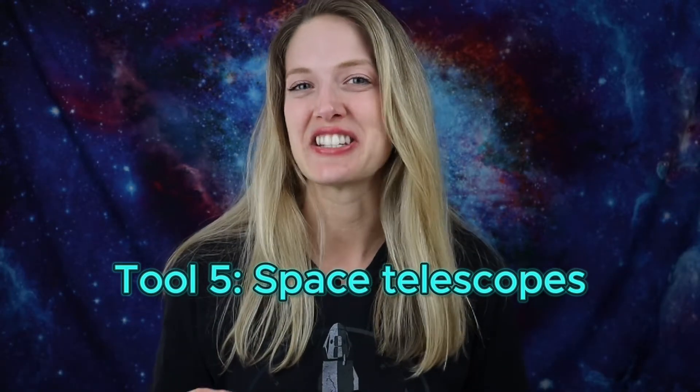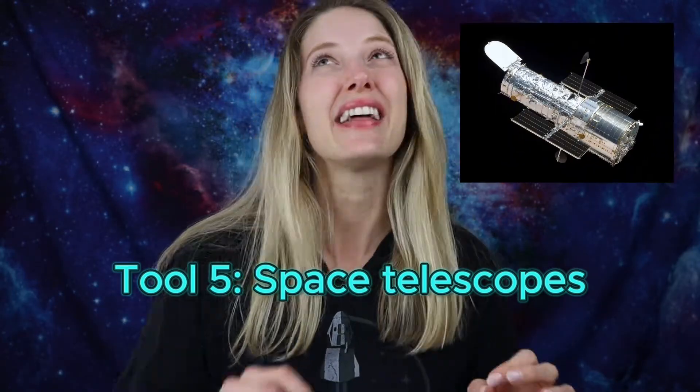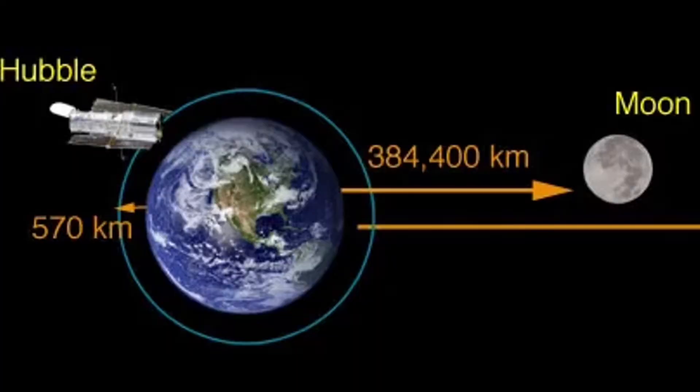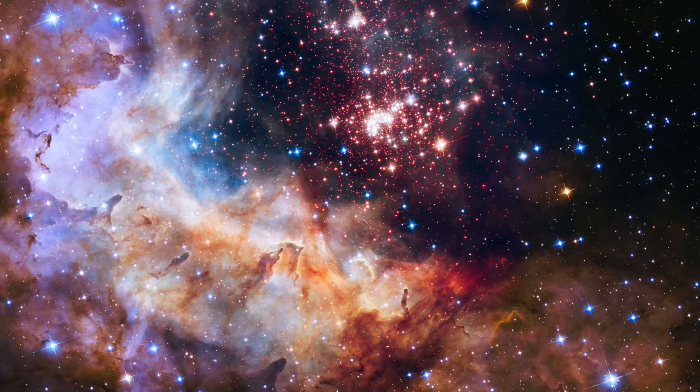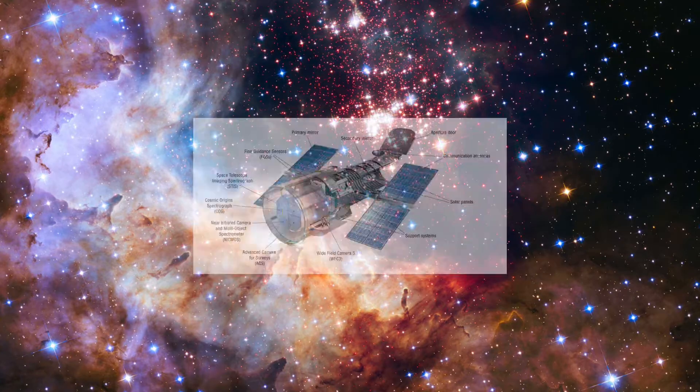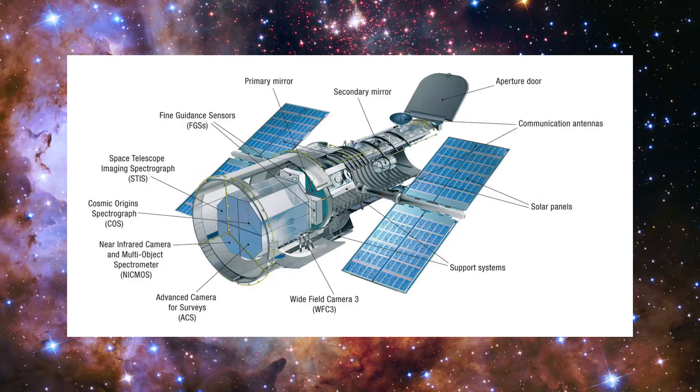Now we have space telescopes, starting with Hubble and then looking onto the James Webb Space Telescope, just to name a couple. Orbiting high above Earth's atmosphere, the Hubble Space Telescope captures breathtaking images in visible, ultraviolet, and infrared light, delivering some of the most fascinating and incredible images of our universe that I've ever seen. It was actually a book on the Hubble Space Telescope that first got me interested in astronomy.